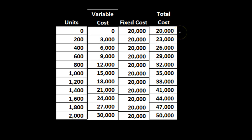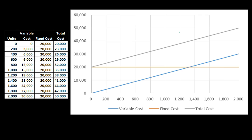Total costs have both a variable and fixed component. If we graph this, we can see it clearly. The $20,000 represents the fixed cost — the red line stays the same as the production level increases. Variable costs start at zero, meaning if we don't make anything we have no variable costs, and they go up at a constant rate as production increases.